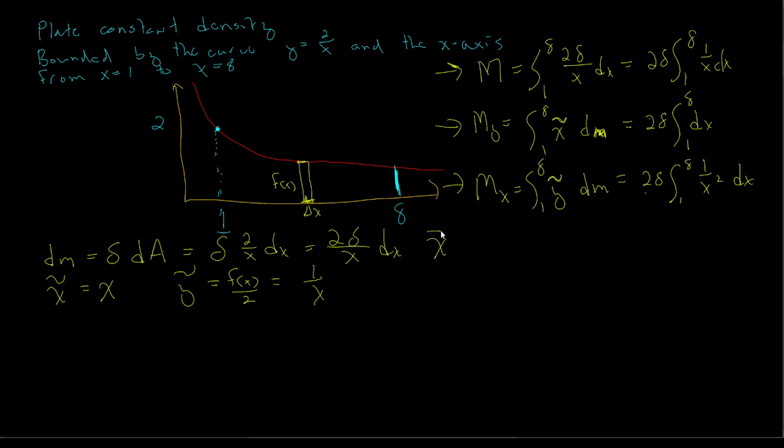Our midpoint in the x direction is the moment about the y-axis divided by the mass, or the integral 2 delta times the integral 1 to 8 of dx, divided by 2 delta times the integral from 1 to 8 of 1 over x dx. The 2 deltas cancel nicely. So the numerator is x evaluated from 1 to 8, and the denominator is ln x evaluated from 1 to 8. That's 8 minus 1 over ln 8 minus ln 1, or 7 over ln 8, which is approximately 3.37. So we have the center of mass in the x direction.